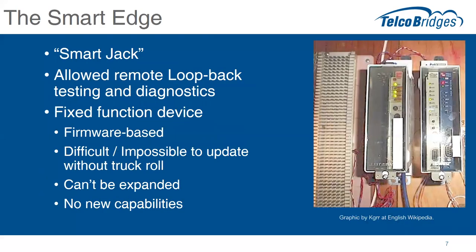So they came with a solution called a smart jack — a device that terminates either a T1 or E1 circuit, maybe a PRI device. It provided remote loopback and some diagnostics so the service provider could remotely do testing to validate the quality of the connection out to the customer site. But it was very fixed function — firmware based, virtually impossible to update if new software was needed without doing a truck roll and physically installing a new one. Certainly it can't be expanded; there was no way to enhance whatever this little box could do. It did what it did and that was all there was to it.